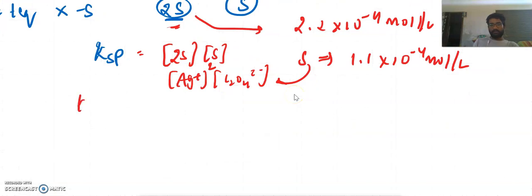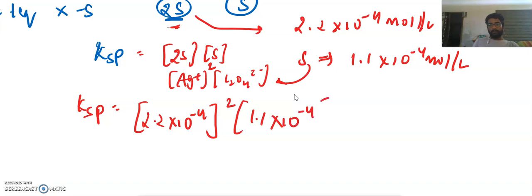Now we will solve it for Ksp. Ksp is Ag+ which is 2.2 into 10 power minus 4 square into 1.1 into 10 power minus 4.